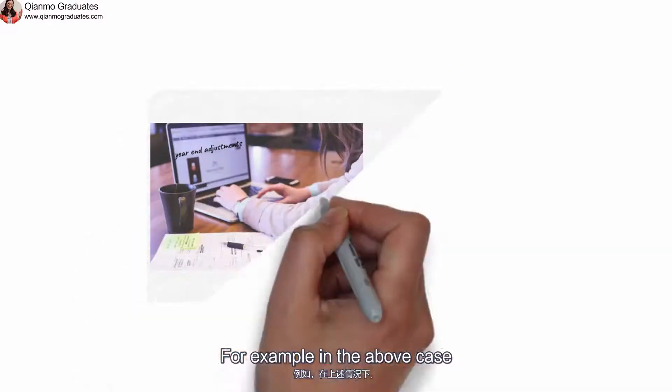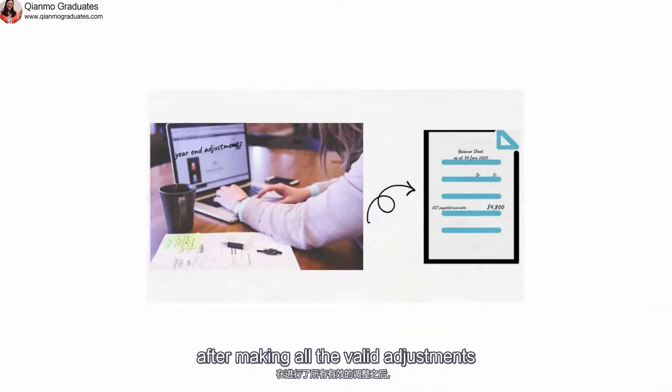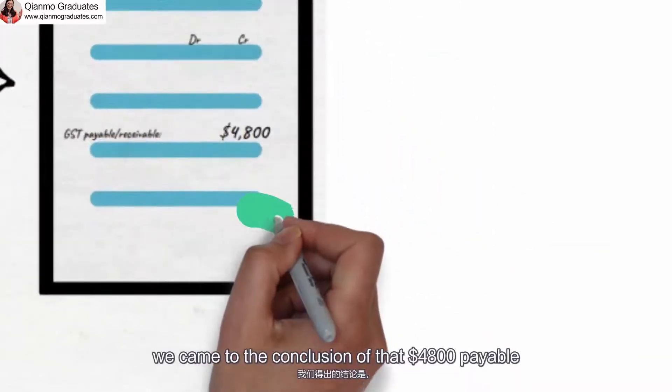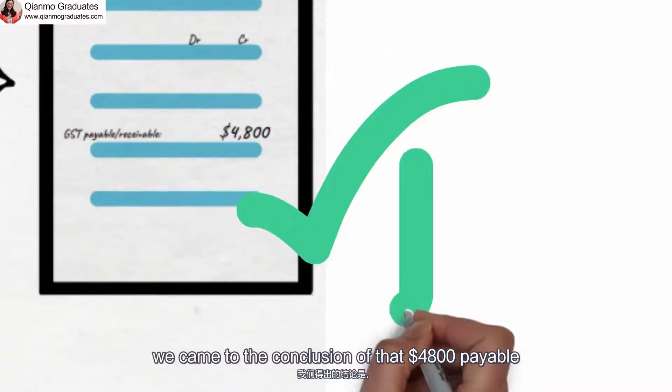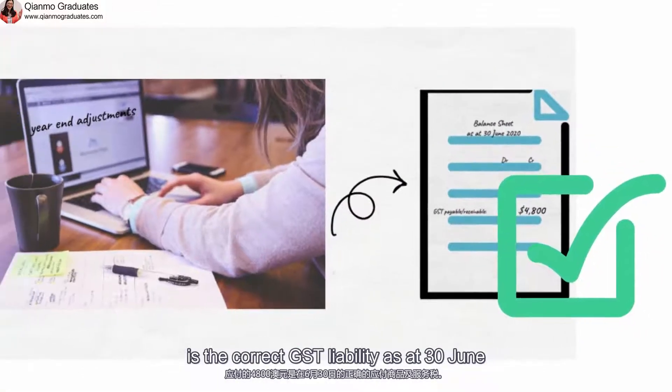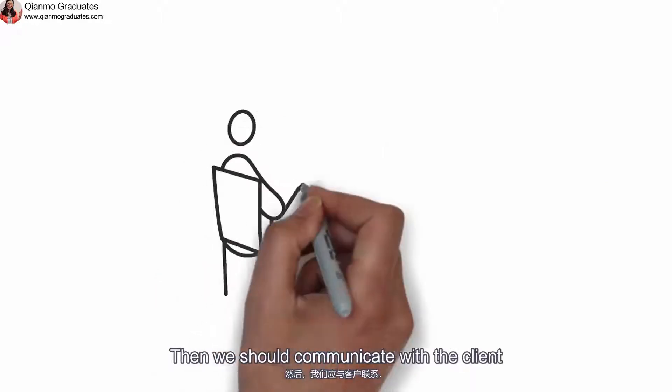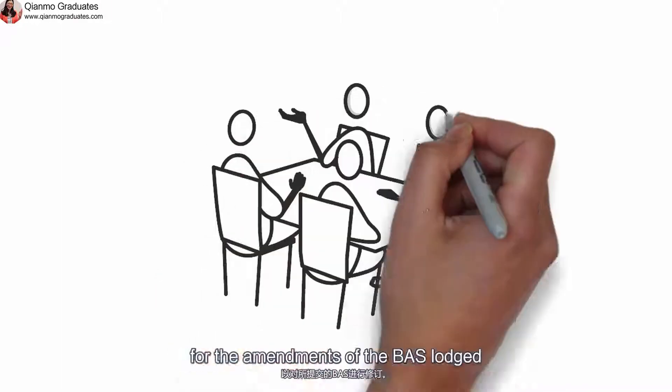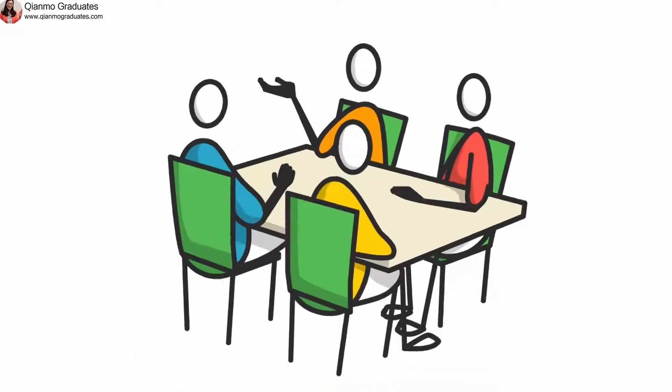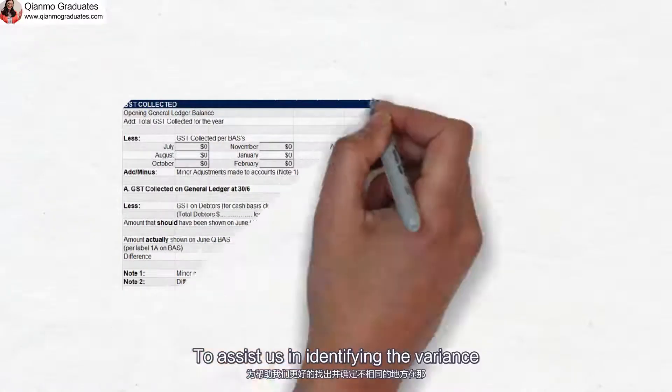But actually, the goal is to find the variance and identify what is the correct GST liability or asset. For example, in the above case, after making all the valid adjustments, we came to the conclusion that $4,800 payable is the correct GST liability as at 30 June. Then we should communicate with the client for the amendments of the BATS lodged.